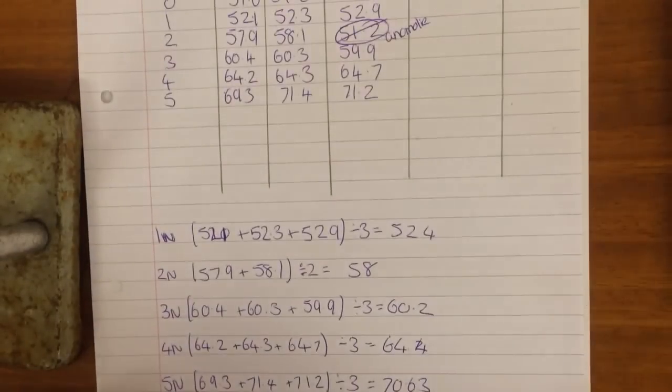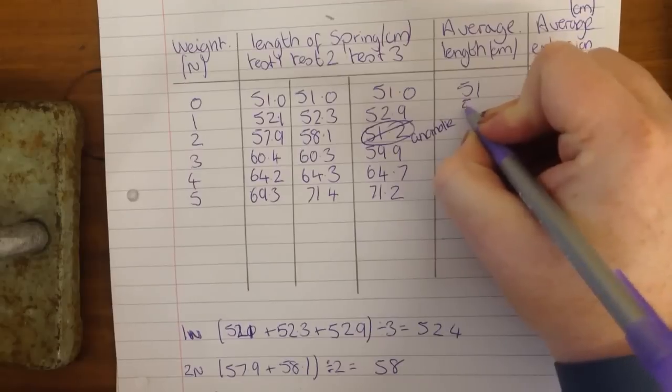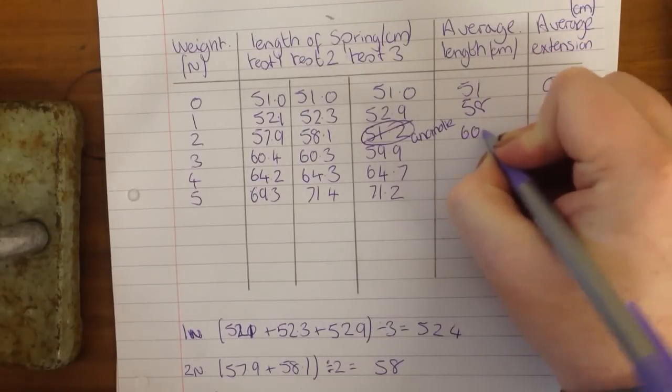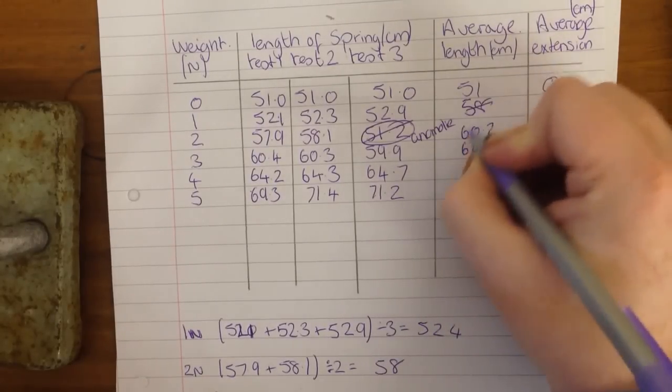Oh, I forgot to do something. So once we have our averages, we need to put them into the table. So that's 58, 60.2, 64, no, that's wrong, my apologies.